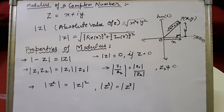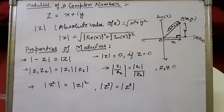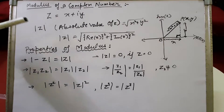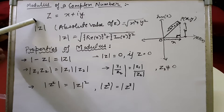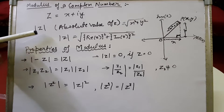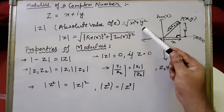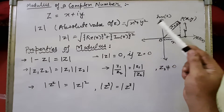In today's class we will be discussing the modulus of a complex number and how to calculate it, along with its properties. Suppose any complex number z equals x plus iy. The modulus of this complex number will be represented as mod of z, also known as the absolute value of z, and the value of mod of z will be under root x squared plus y squared.